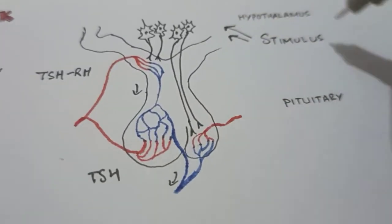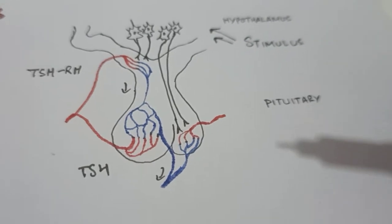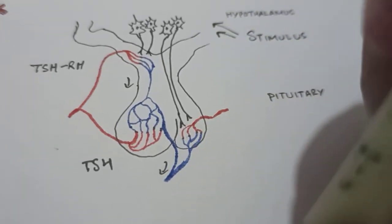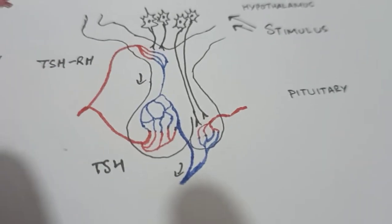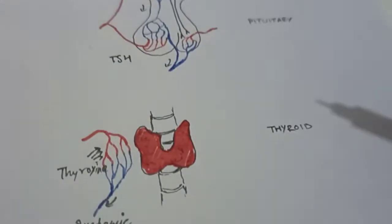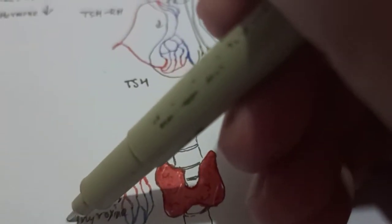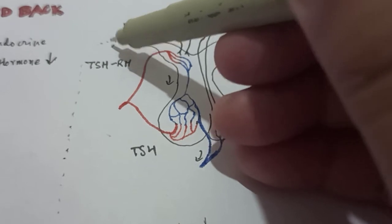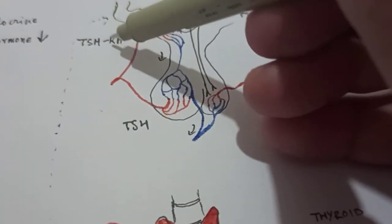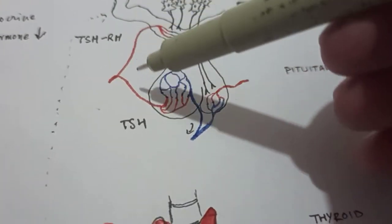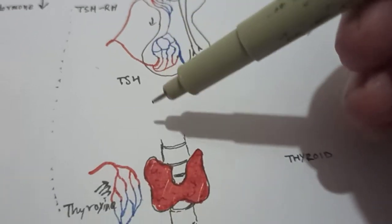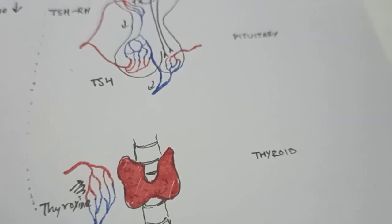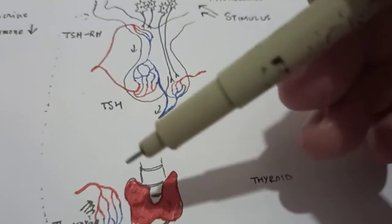Once the stimulus is no longer needed — meaning the situation has changed and no longer demands an increase in BMR — the excessive thyroxine, since it is not required, sends a signal back to the hypothalamus. This signal indicates that thyroxine is present in excessive amounts, and the hypothalamus will stop the secretion of TSH-releasing hormone. Once that TSHRH secretion is stopped, the entire process stops. This is what is known as the feedback mechanism.